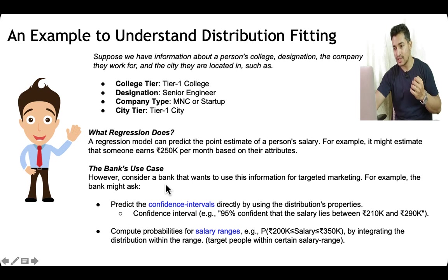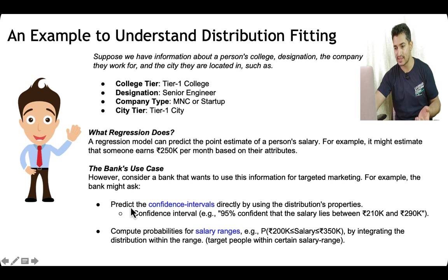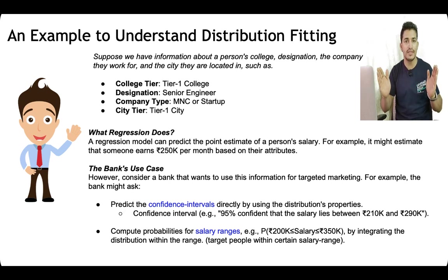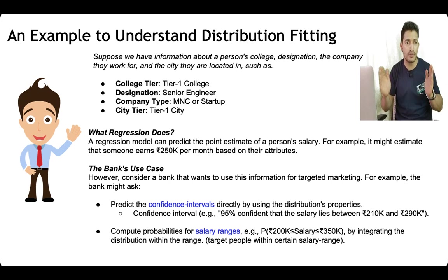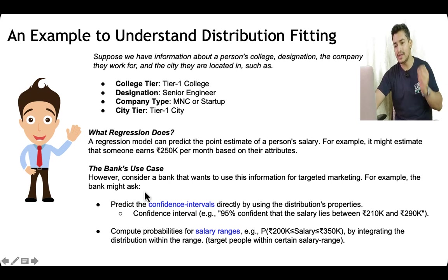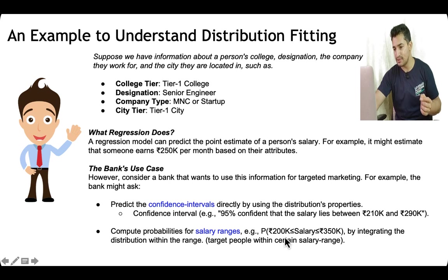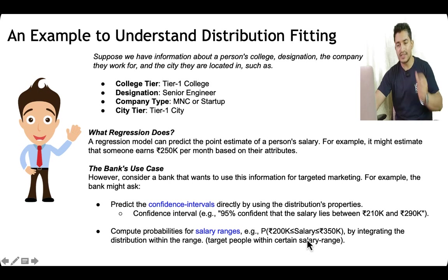Let's say the use case is different — consider a bank that wants to use this information for targeted marketing. The bank might ask: what is the 80th percentile confidence interval of the salary of the person, or the 95th percentile confidence interval? It can also ask questions like: what is the probability that the salary lies between 200k to 350k monthly?